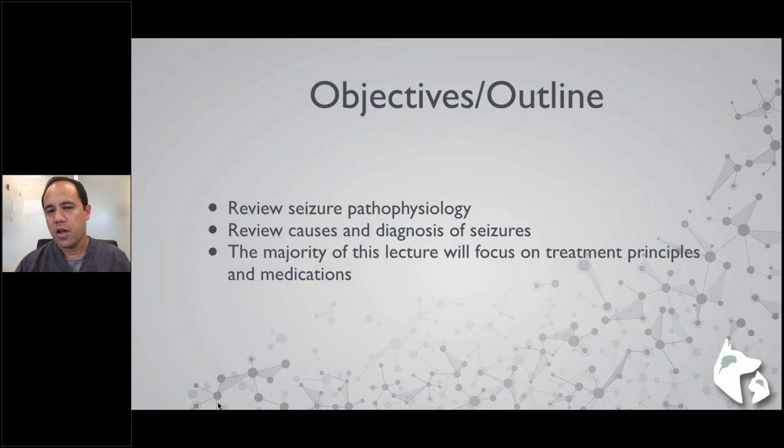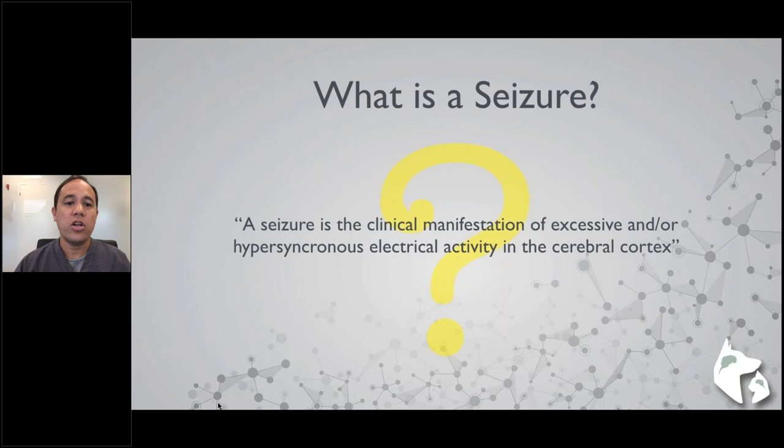What exactly is a seizure? A seizure is the clinical manifestation of excessive and hypersynchronous electrical activity in the cerebral cortex. Importantly, a seizure is not a disease — it is a symptom of a disease. It is what we see on the outside when this abnormal electrical activity is happening inside the brain.